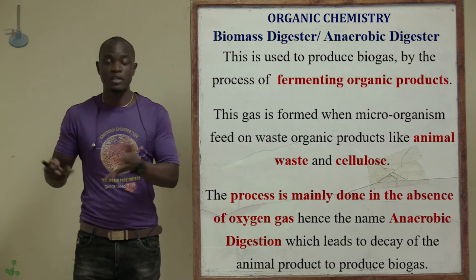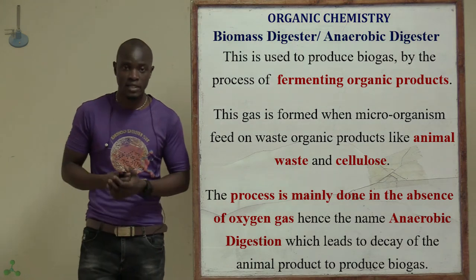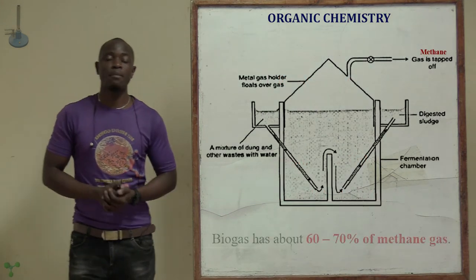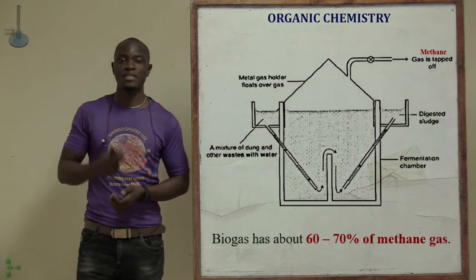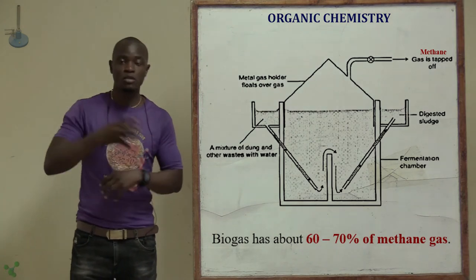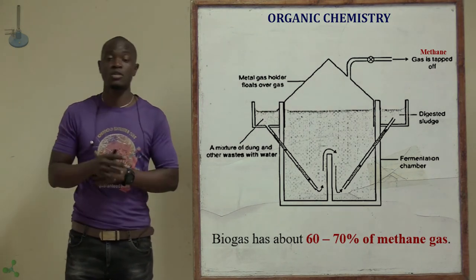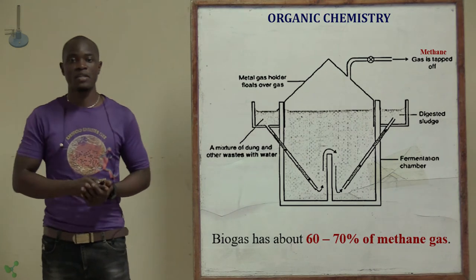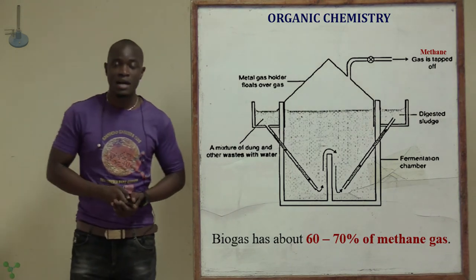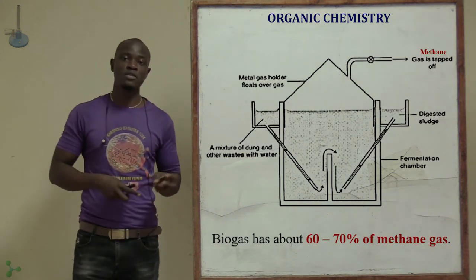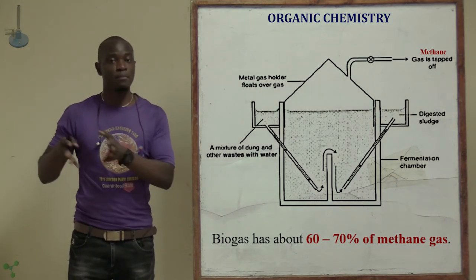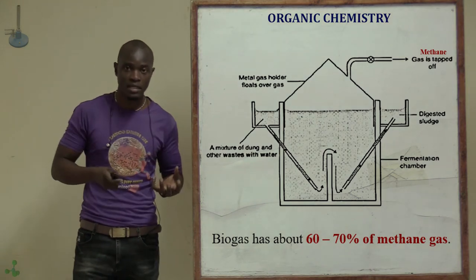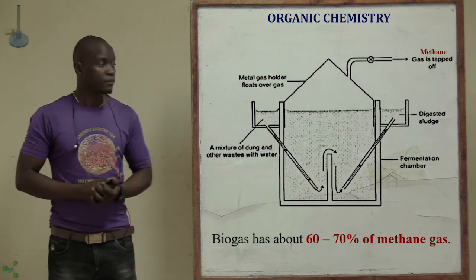Biogas mainly contains about 65% methane gas — between 60 to 70% methane gas. This gas is mainly used for cooking and also for running relevant machinery. Cooking is the primary function of biogas.